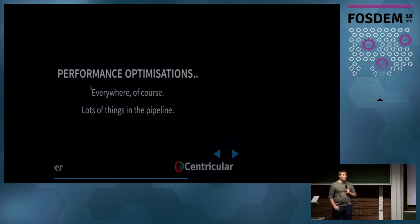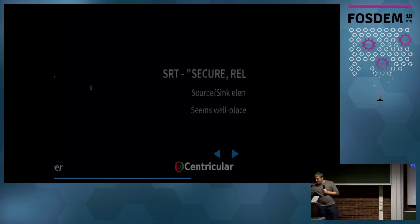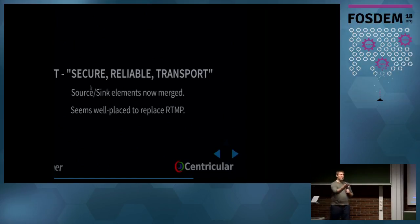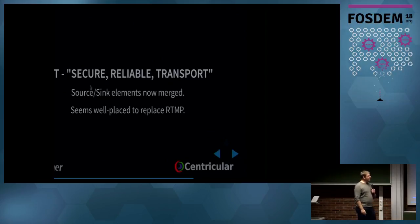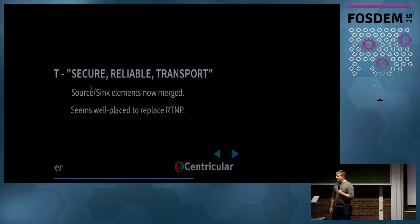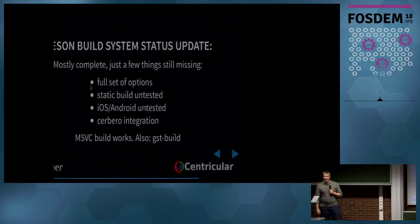We have performance optimizations more or less everywhere. For the embedded-specific parts, see Olivier's talk. SRT — Secure Reliable Transport — is a new protocol, very much hyped but also very nice. There seems to be broad industry support for it, and it seems well-placed to replace RTMP. We've just merged source and sink plugins for SRT, so you can start streaming with it.